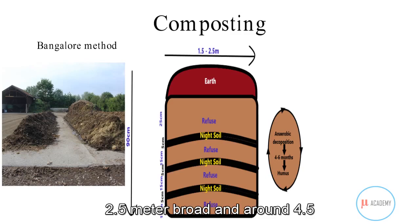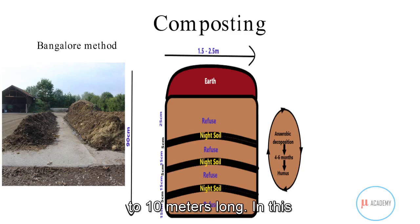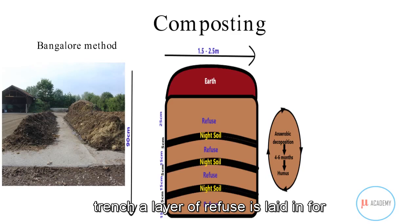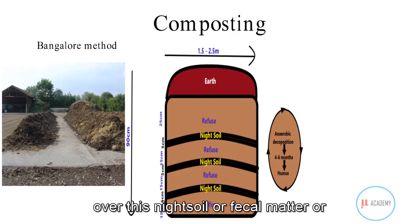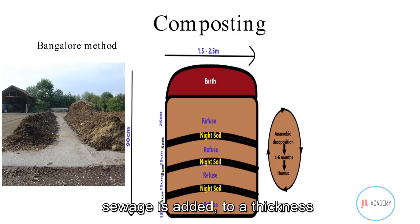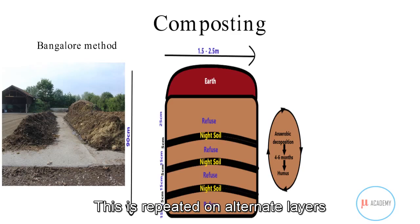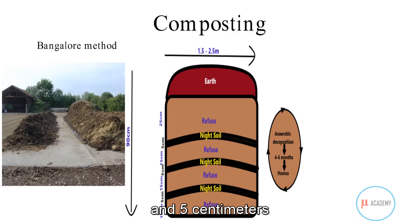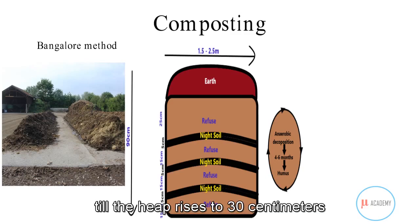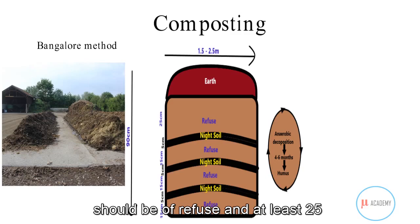The Bangalore method trench is 1.5 to 2.5 meters broad and 4.5 to 10 meters long. A layer of refuse is laid 15 centimeters thick, above which night soil, fecal matter, or sewage is added to a thickness of 5 centimeters. This is repeated in alternate layers of 15 centimeters and 5 centimeters until the heap rises 30 centimeters above ground level.